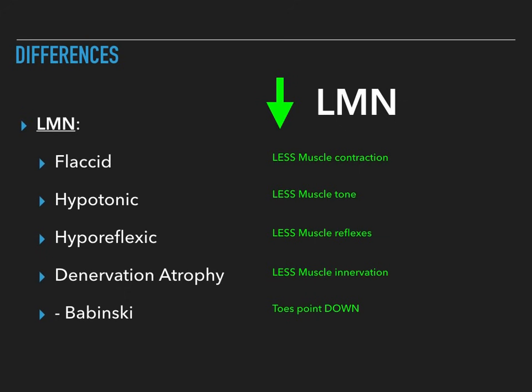In a lower motor neuron lesion, the lesion is to the anterior horn cell or the nerve projecting from that anterior horn to the muscle — such as a nerve crush injury. You immediately lose direct innervation to the muscle, so the muscle becomes flaccid, hypotonic, and hyporeflexic. You de-innervate that muscle, so it immediately atrophies. You have a negative Babinski sign, which is a normal finding. The down arrow helps you remember: less muscle contraction, less muscle tone, less muscle reflexes, less muscle innervation, and the toes point down.